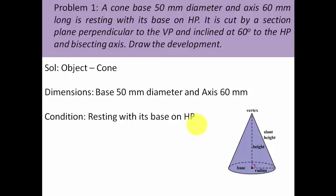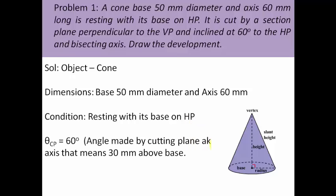Let's move ahead and extract data regarding this cutting plane, the auxiliary inclined plane. That's what you call a cutting plane when it makes a certain angle with the horizontal plane and perpendicular to the vertical plane as well. The cutting plane is at an angle of 60 degrees and at the same time it is bisecting this axis.